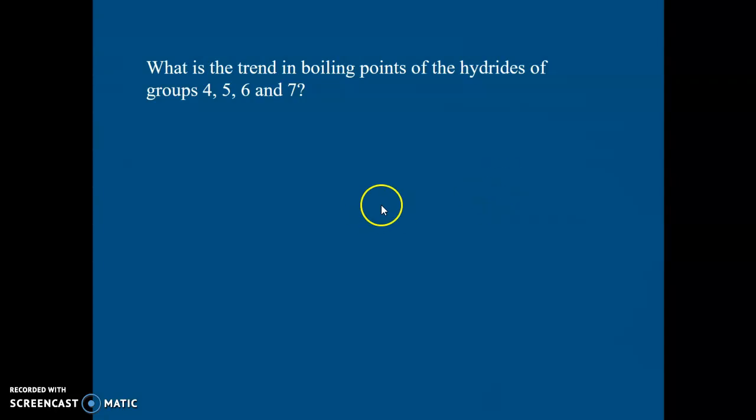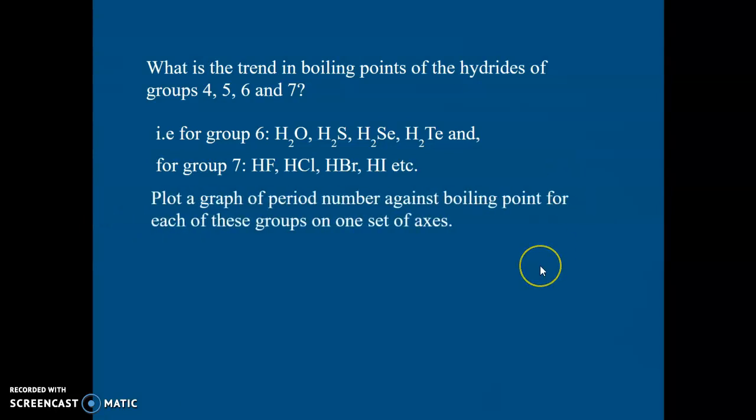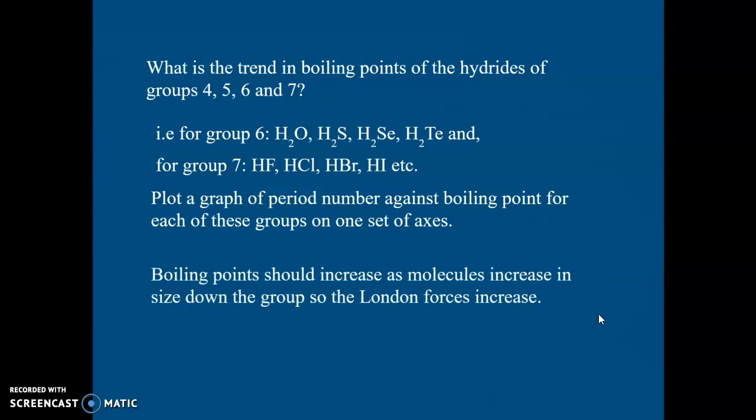So the hydrides of groups 4, 5, 6 and 7 are these, H2O, H2S, and so on. Group 5 will contain nitrogen, NH3, PH3 and so on. And group 4, methane, CH4 and so on, SiH4. So now, please don't bother to do this unless you really want to. It comes up on the next slide anyway. But if you plot a graph of period number against boiling point for each of those groups on one set of axes, then you should, in theory, but for the existence of hydrogen bonding, get a general increase down each group as the molecule gets bigger. So let's have a look at the plot though. So now let's have a look at the next slide.